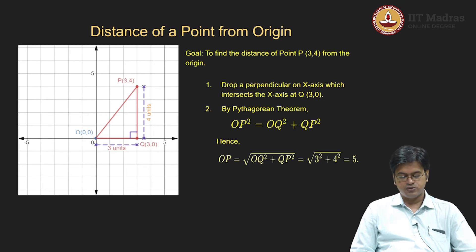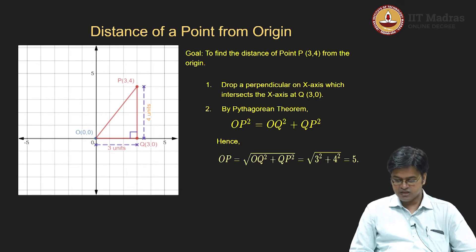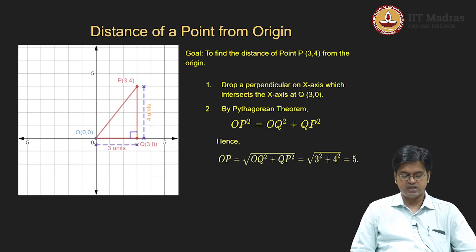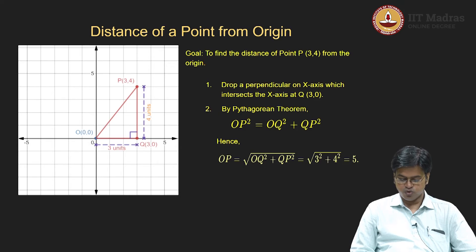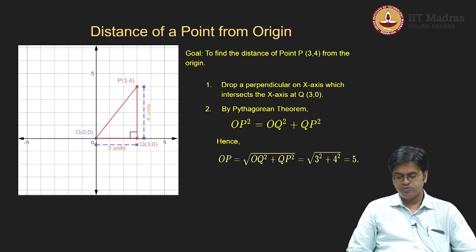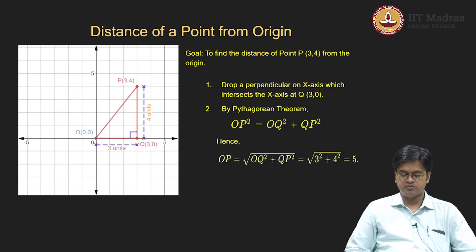Does this have anything special to do with the point 3 comma 4, or can I generalize this? The answer is yes — it has nothing special to do with 3 comma 4. I could start with a point P at x comma y, project it onto the x-axis to get x comma 0, so the length of OQ is x and the length of QP is y. Therefore the formula OP = √(x² + y²) holds for any point.